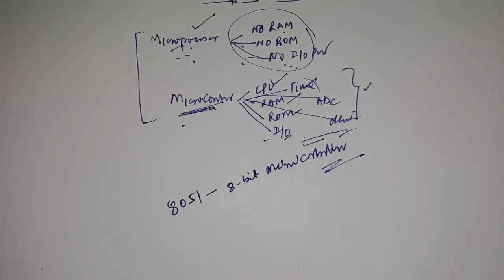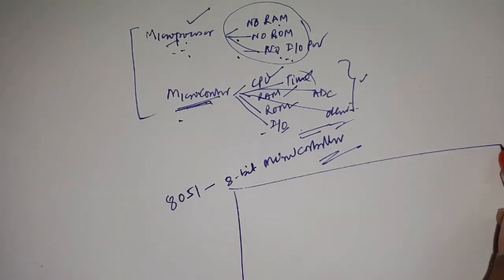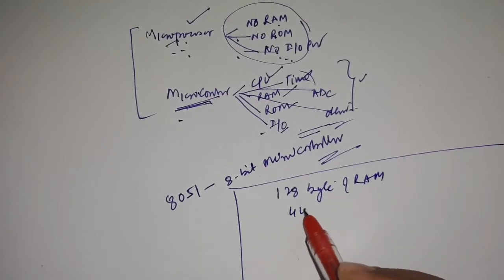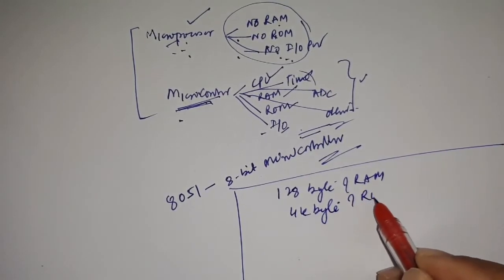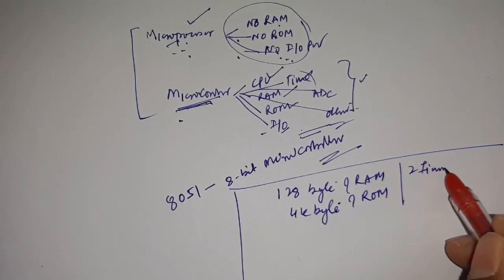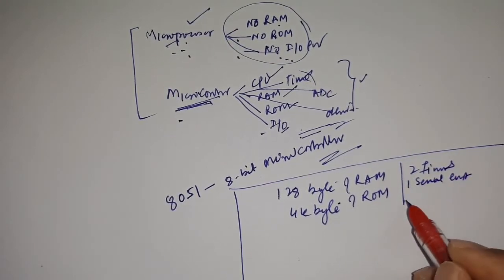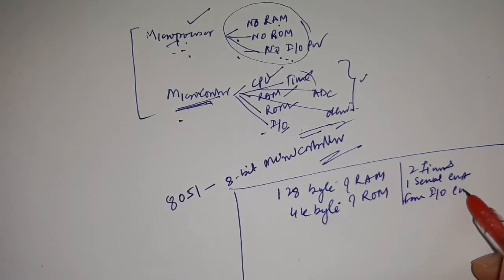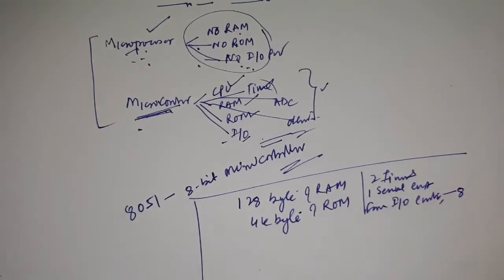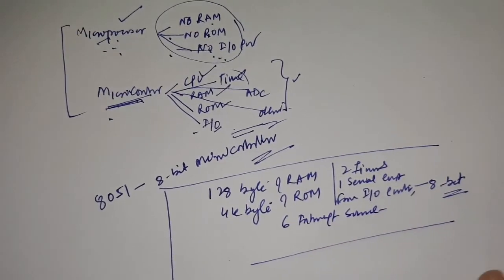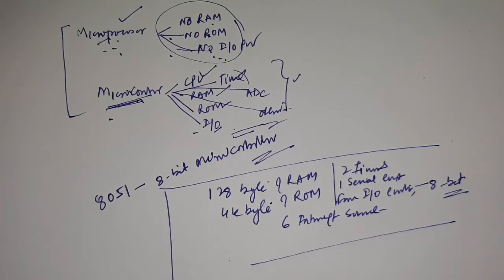The 8051 is an 8-bit microcontroller. Let me explain the properties of the 8051 microcontroller. It has 128 bytes of RAM, 4K bytes of ROM, 2 timers, 1 serial port, 4 input/output ports where each port is 8-bit, each port contains 8 bits, and 6 interrupt sources. This is the basic property of the 8051 microcontroller.